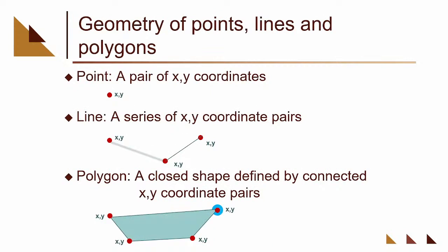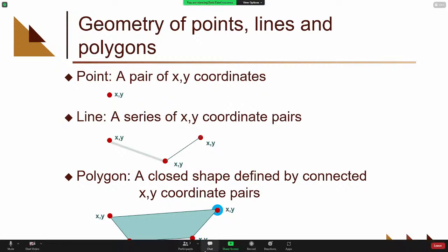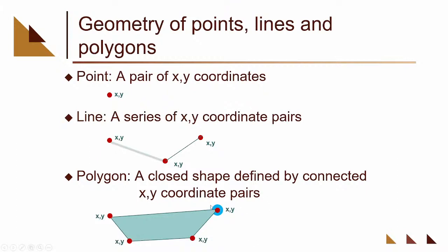The way we store this information on the back end: a point just has a single XY location. A line has a series of points connected together that make up a line. A polygon is just like a line — it's a series of XY locations — the only difference being that the start coordinate and the end coordinate are exactly the same, so it closes that line out and becomes a polygon.